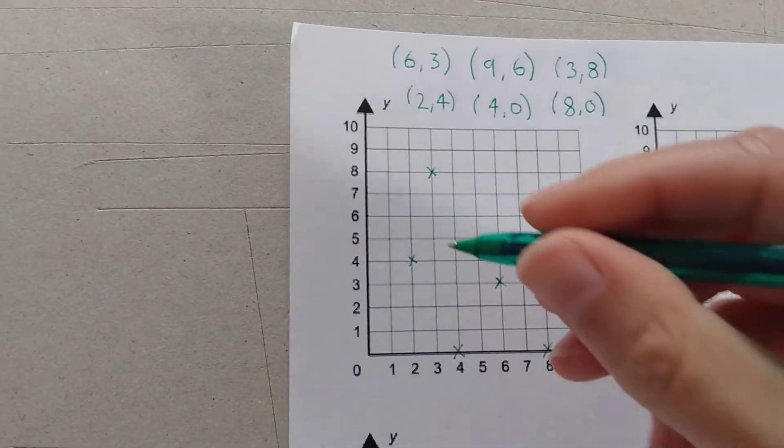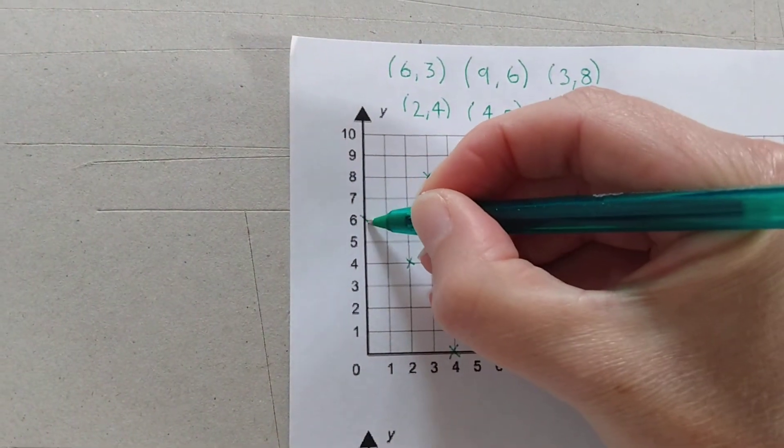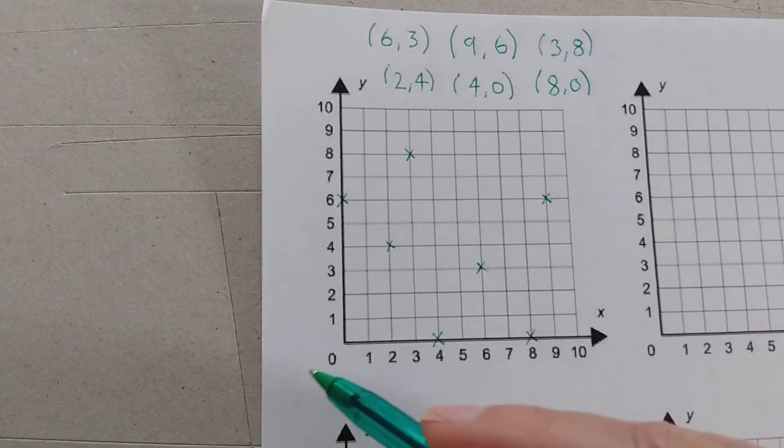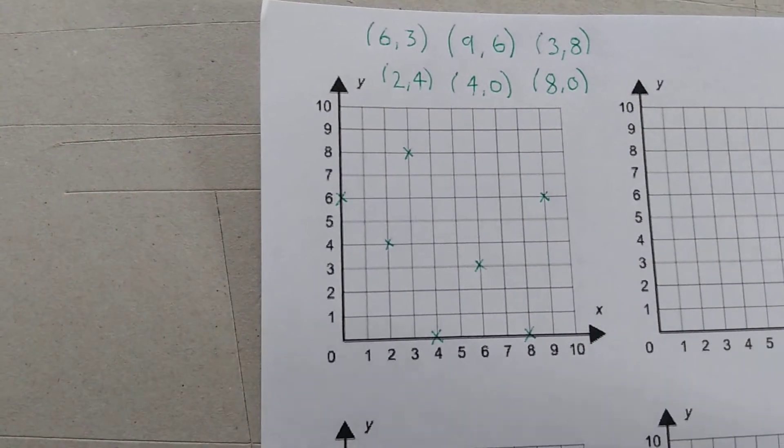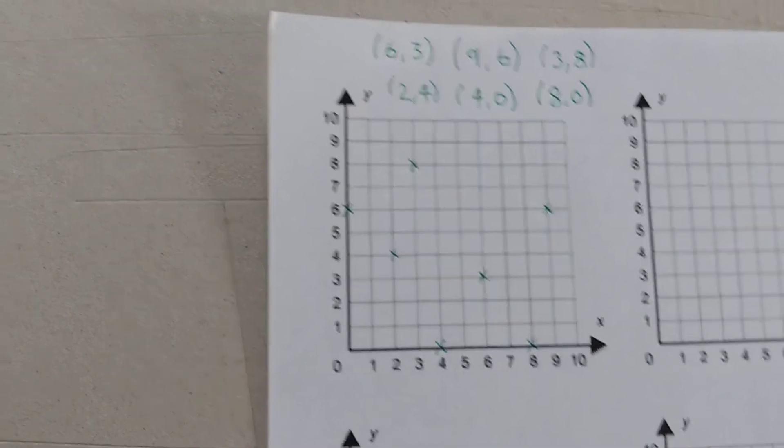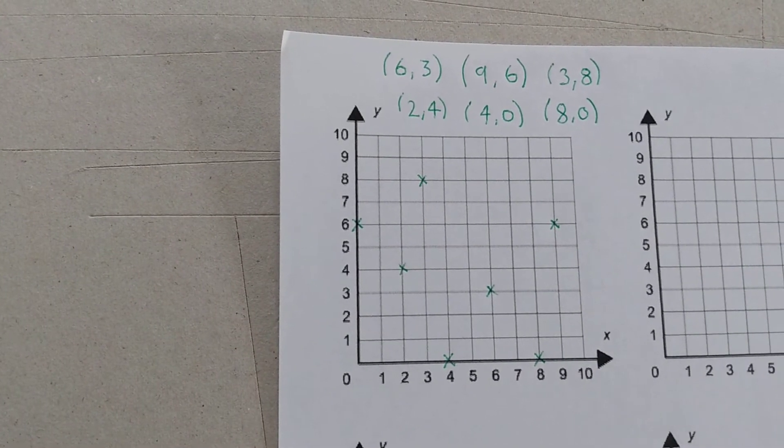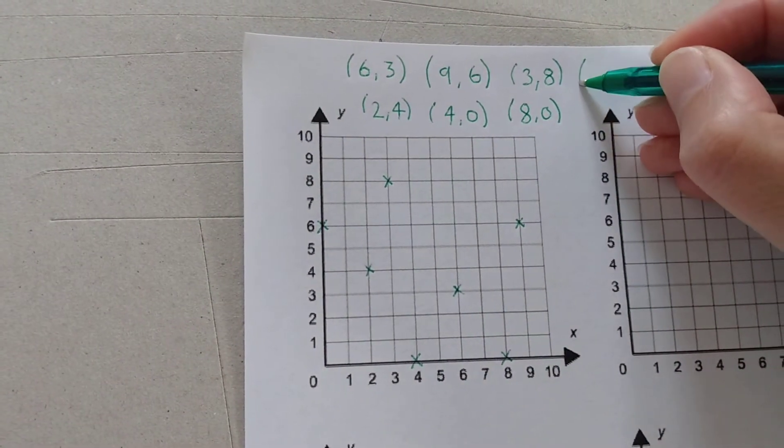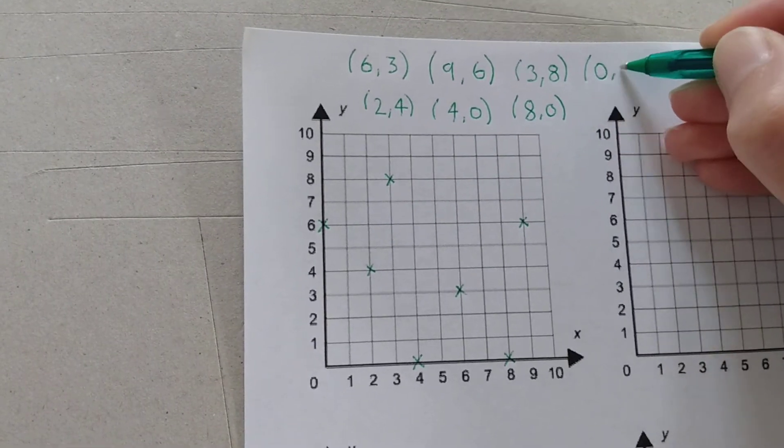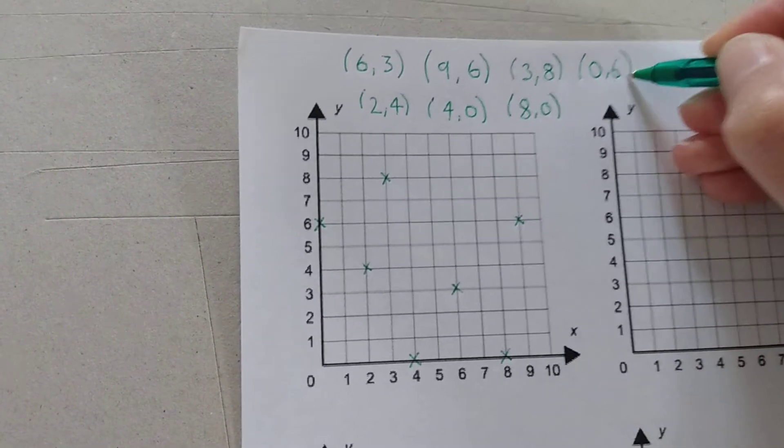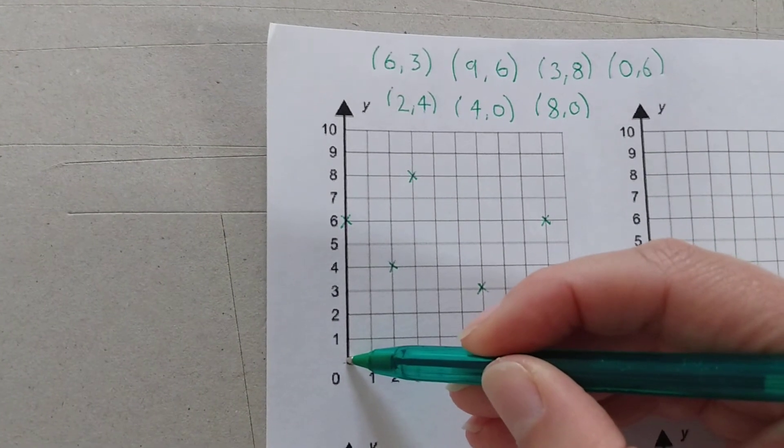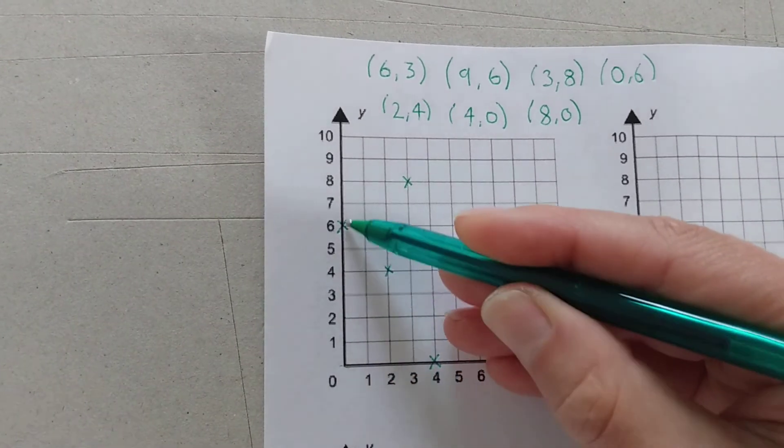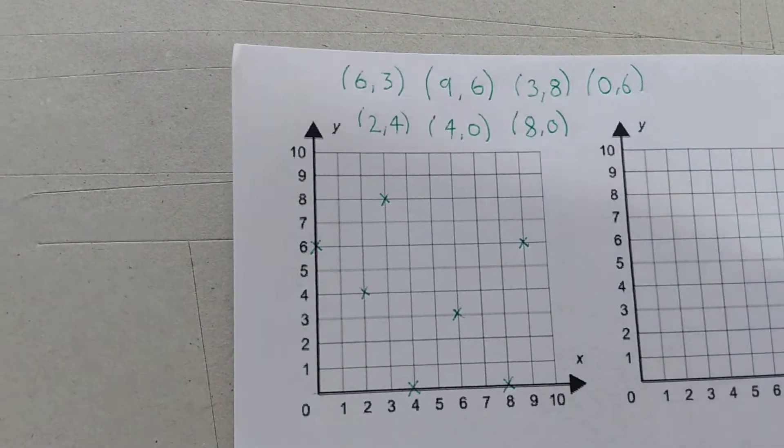So what about this one? What if I was to put my cross here? Remember we need to go along the x-axis first if we can before we go up the y-axis. Very well done if you ended up with 0,6. We went along nothing to be underneath that one just 0 but we went up 6. So 0,6.